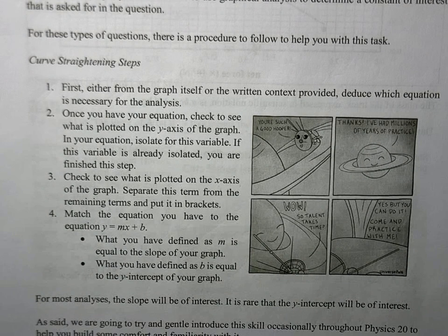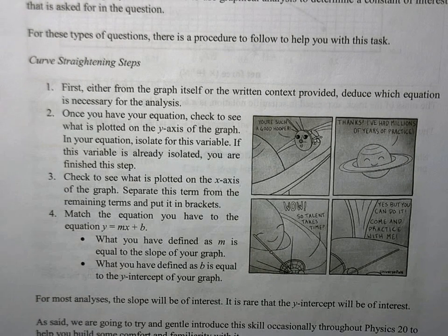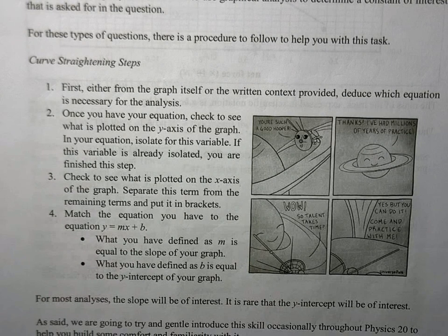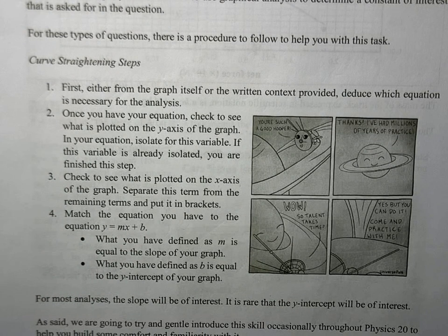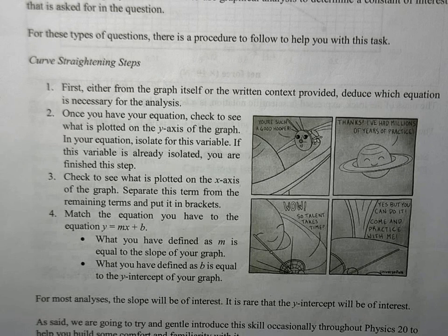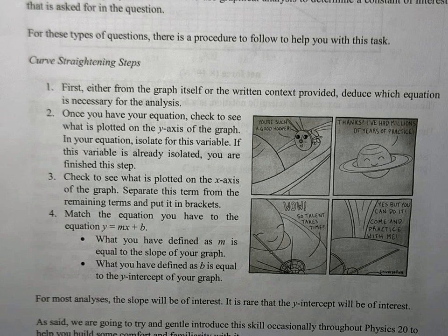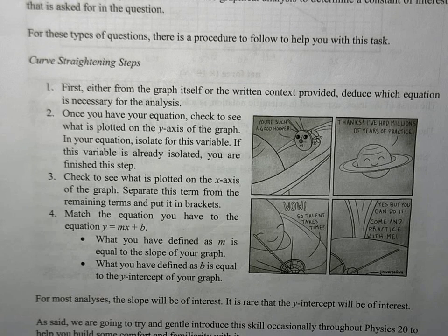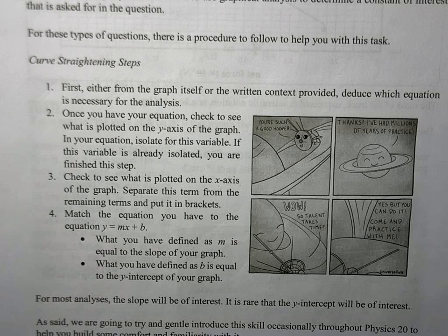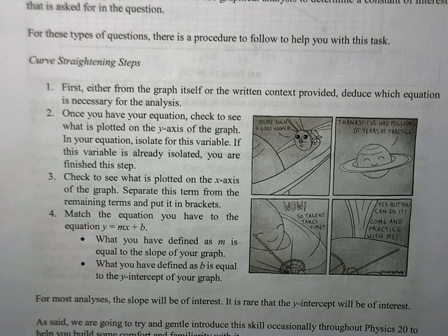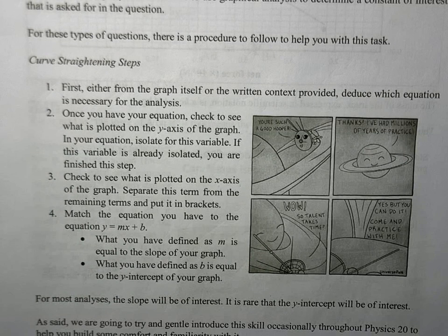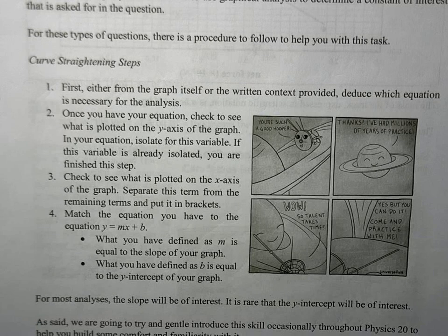So this whole process is what we call curve straightening. Here's the gist and we're going to do an example together. Based on the graph that you have or the written context provided, you need to actually figure out what equation you're investigating. Once you know the equation you're investigating, you need to figure out what is on the y-axis and x-axis of your graph. In that equation, you want to isolate for the y variable. Most of the time that's already done for you.